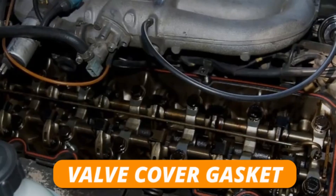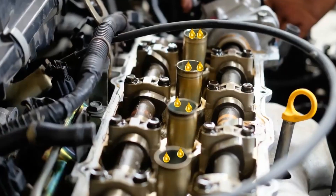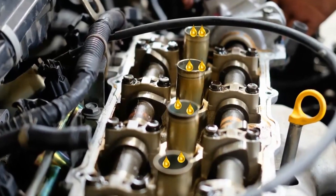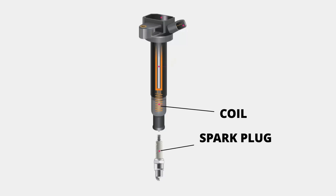A bad valve cover gasket can also cause the P0300 code. If the valve cover gasket is torn, it could allow engine oil into the spark plug wells and prevent the ignition coil from sending the correct voltage into the spark plug to create a good spark. This can be intermittent and cause the P0300 code.